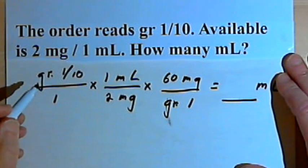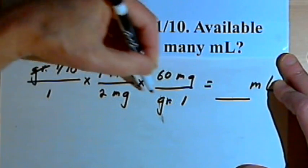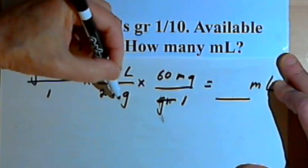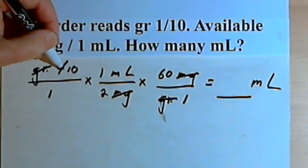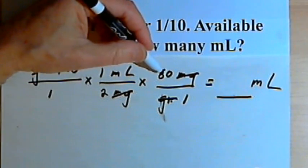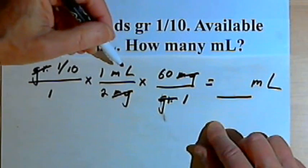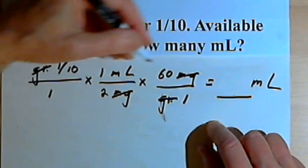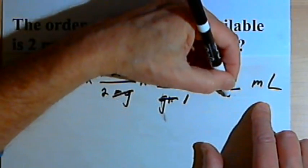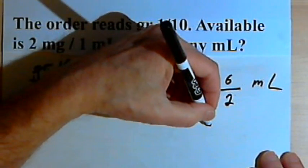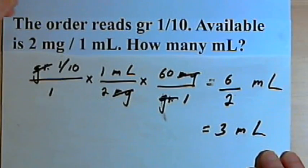Now I should be able to cancel out both the grains and the milligrams. The grains cancel — I've got grains in the numerator and the denominator — and the milligrams cancel too. Now I've got 1/10 times 1 milliliter times 60, with a 2 in the denominator. Multiply 1/10 times 60 to get 6, giving 6 milliliters over 2. That reduces to 3 milliliters, so the answer is 3 milliliters.